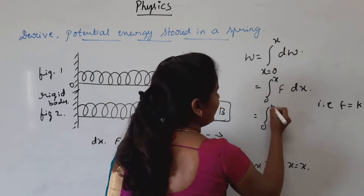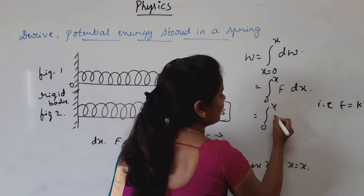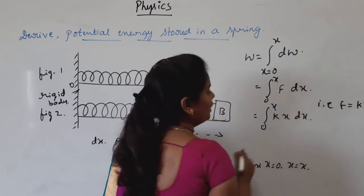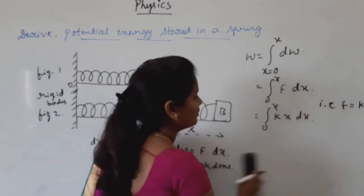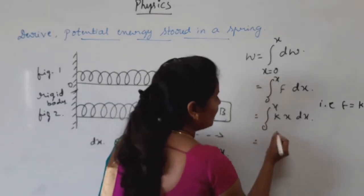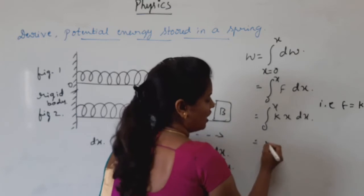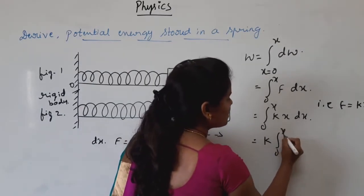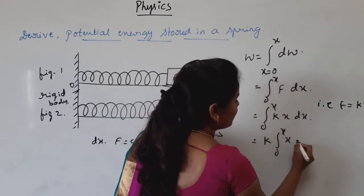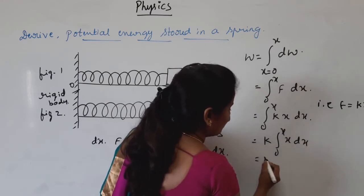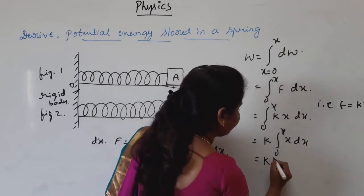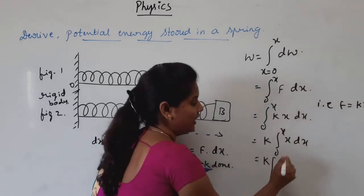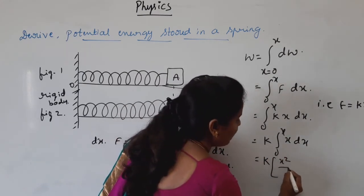Substituting F equals KX, we get W equals the integral from 0 to X of K times X DX. Since K is a constant, take it outside: W equals K times the integral from 0 to X of X DX. Integration of X gives X squared divided by 2.